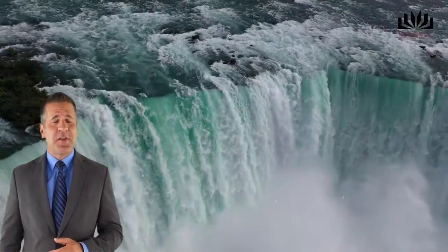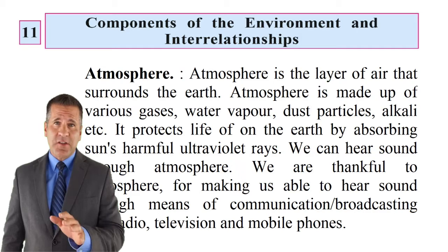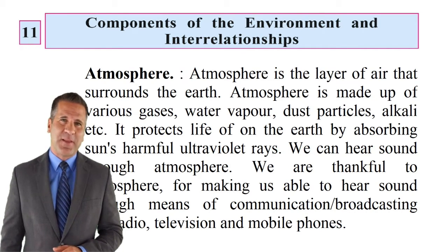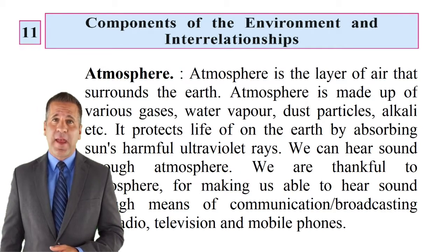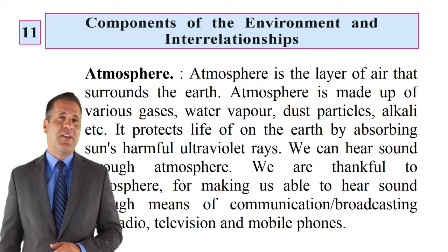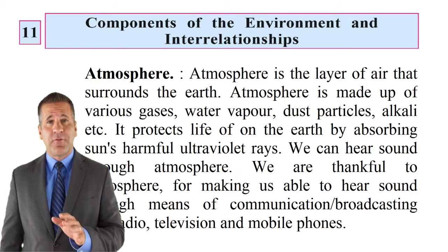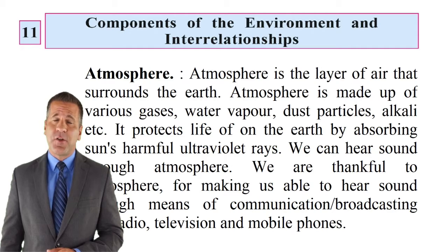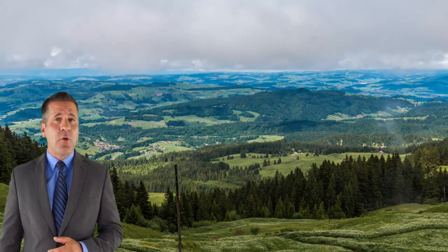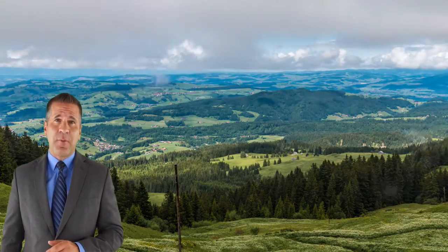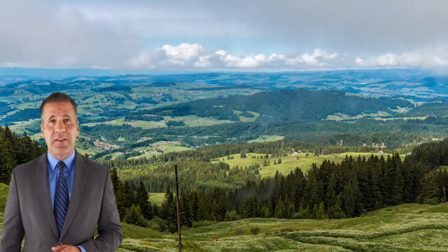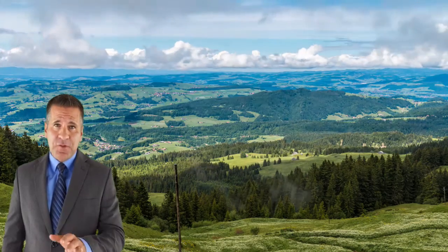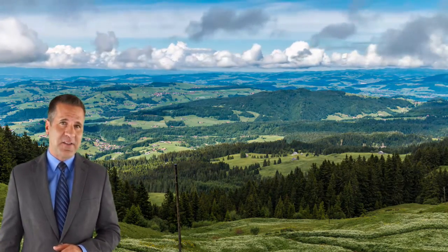Atmosphere is the layer of air that surrounds the earth. It is made up of various gases, water vapor, dust particles, alkali etc. It protects life on earth by absorbing the sun's harmful ultraviolet rays. We can hear sound through the atmosphere, and we are thankful to the atmosphere for enabling communication through radio, television and mobile phones. वातावरण: पृथ्वी के चारों तरफ आए हवा के आवरण को वातावरण कहते हैं। वातावरण विविध गैसों, जलवाष्प, धूल के कणों, शर्कराओं आदि से बना है। वातावरण सूर्य की पराबैंगनी किरणों को शोषित कर जीव सृष्टि की रक्षा करता है। वातावरण के माध्यम से हम आवाज सुनते हैं; Radio, television और mobile phone के संदेश व्यवहार और प्रसारण वातावरण के आभारी हैं।